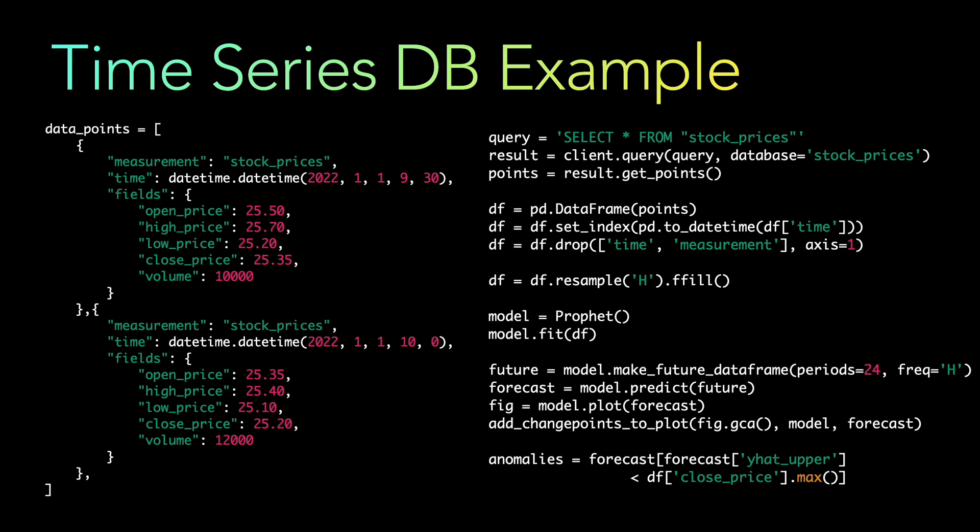Finally, potential anomalies are identified as points where the predicted upper bound of the forecast is below the maximum observed value in the original data. In summary, even without deep knowledge of InfluxDB, the high-level flow is: get data from the database, plot it on a Prophet model, make predictions, and create an anomaly detection forecast — all using Facebook's Prophet library.